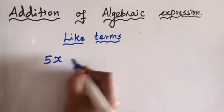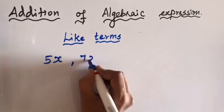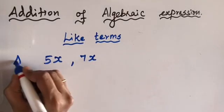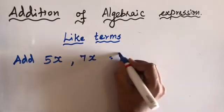You can add 5x and 7x. So while adding 5x and 7x, what do you get? 12x.